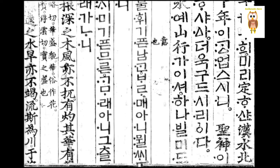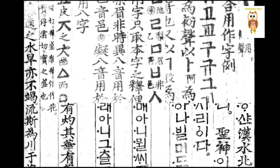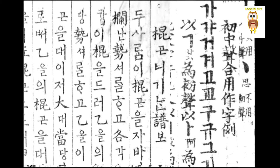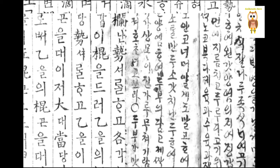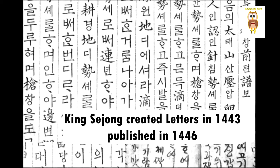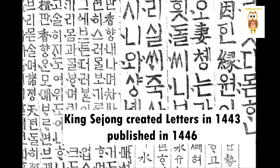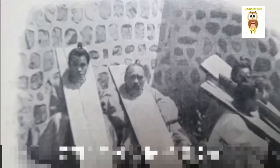First you need to know about the background of its creation. Korean letters were created by King Sejong in 1443, and distributed to the public in 1446. King Sejong was the king of the Joseon dynasty. In order to know the reason for Sejong's creation of letters, we need to know the situation of the Joseon dynasty at the time.